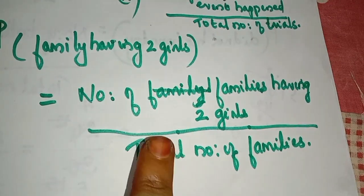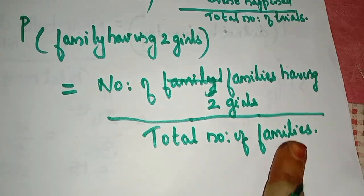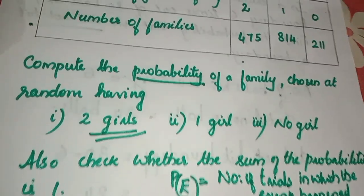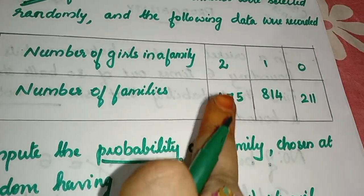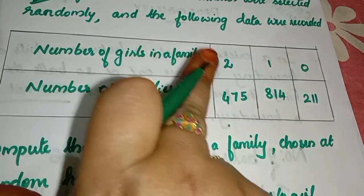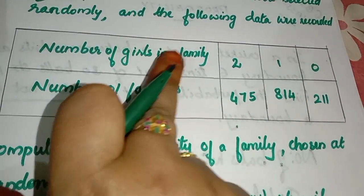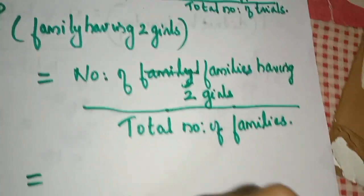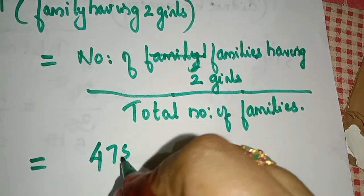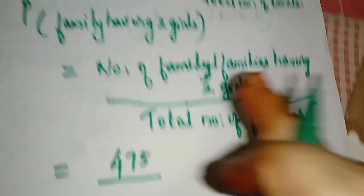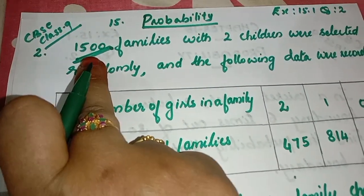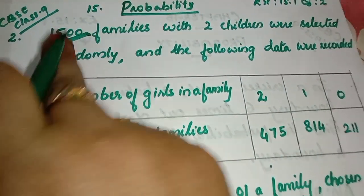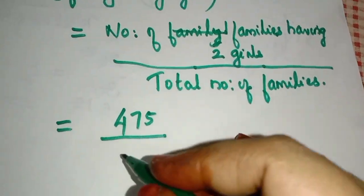Number of families having two girls — how many families have two girls? 475. Divided by total number of families: 1,500. So P(two girls) = 475 divided by 1,500.